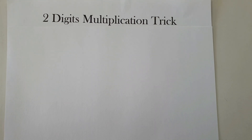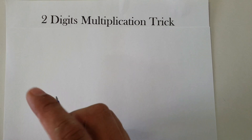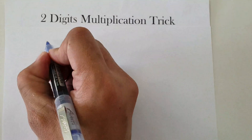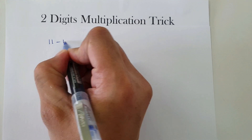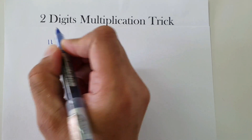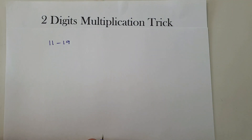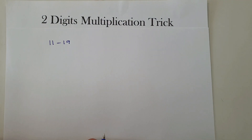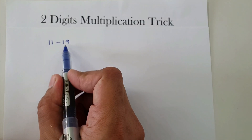The first trick I'm going to show you is the technique when multiplying numbers from 11 to 19. This technique is applicable only to numbers 11 to 19.